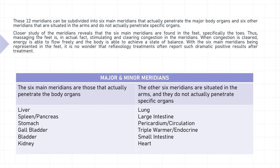Here we see illustrated the major and minor meridians. The six main meridians are those that actually penetrate the body organs — the liver, the spleen and pancreas, the stomach, the gallbladder, the bladder, and the kidney. The other six meridians are situated in the arms and do not actually penetrate specific organs: the lung, the large intestine, the pericardium circulation, the triple warmer, the small intestine, and the heart.